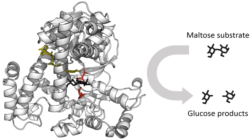In 1958, Daniel Koshland suggested a modification to the lock and key model. Since enzymes are rather flexible structures, the active site is continuously reshaped by interactions with the substrate as the substrate interacts with the enzyme. As a result, the substrate does not simply bind to a rigid active site; the amino acid side chains that make up the active site are molded into the precise positions that enable the enzyme to perform its catalytic function. In some cases, such as glycosidases, the substrate molecule also changes shape slightly as it enters the active site. The active site continues to change until the substrate is completely bound, at which point the final shape and charge distribution is determined. Induced fit may enhance the fidelity of molecular recognition via the conformational proofreading mechanism.